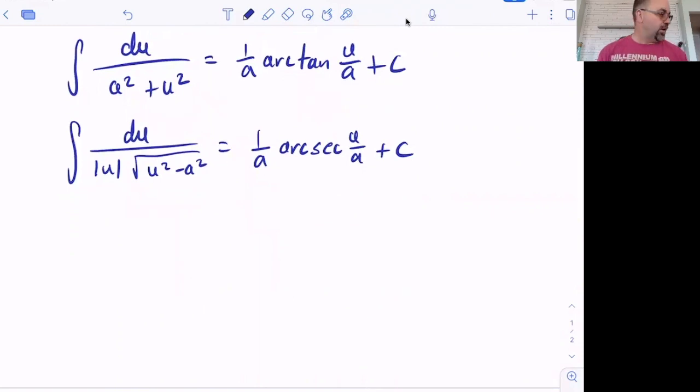All right. So let's continue on here. What I'd like to do is do an example here for you with some actual numbers. So my example number one is pretty straightforward. Suppose we were trying to integrate and we have the function dx over square root of four minus x squared. So which one of these does it fit the best?